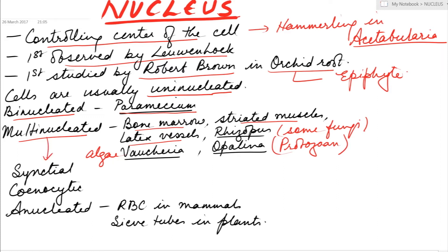The multinucleated condition is known as synexial in animals and sinusitic in plants and fungi. Some cells like RBC in mammals and sieve tubes in plants are without nuclei. Such condition is known as enucleated.